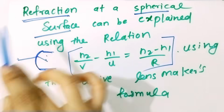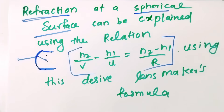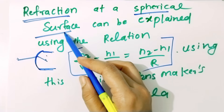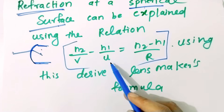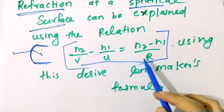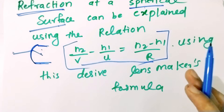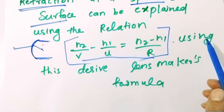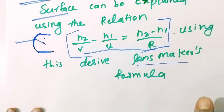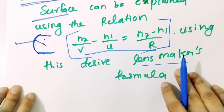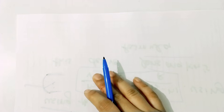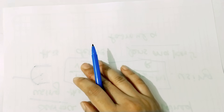This is actually a refraction at a spherical surface. This is a mathematical expression — a relation. This is the Lens Makers Formula derivation. There is a direct derivation of it, and you can get a good understanding of it.